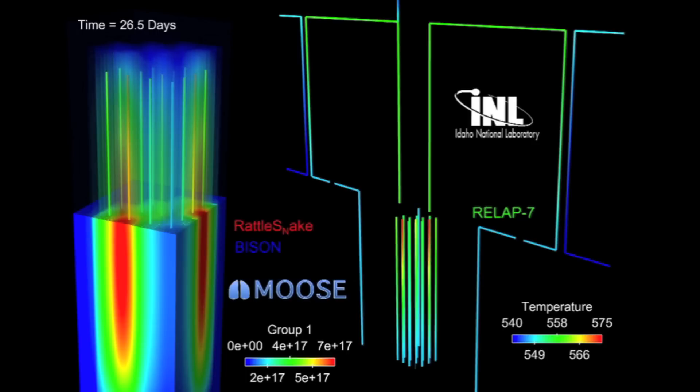We're actually going to be modeling the thermal hydraulics using RELAP7, the neutronics using Rattlesnake, and then what's not pictured in this particular movie is that we're also going to be modeling each of the individual fuel elements within the reactor core. Those rods are actually going to be individually simulated by BISON, and we'll take a look at what's happening to the fuel here in just a moment.